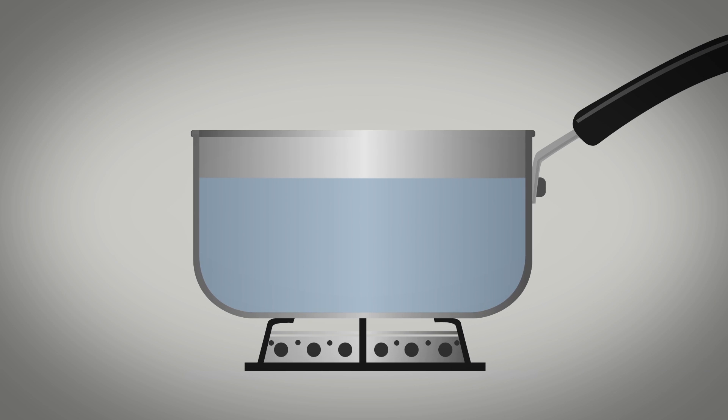When we heat a metal pan on the hob, or a baking tin in the oven, it quickly heats up and transfers heat energy to the food inside the pan. It does this by the process of conduction. Metal is a very good conductor of heat.